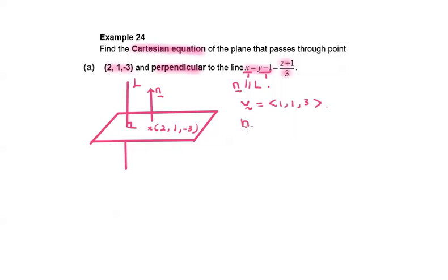So, we can take the normal as vector (1, 1, 3). Substitute into the vector equation R·N = A·N.